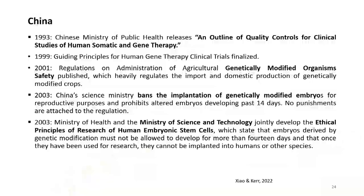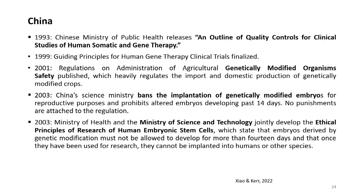Let us now examine developments in China. In 1993, the Chinese Ministry of Public Health released an outline of quality controls for clinical studies of human somatic gene therapy. In 1999, guiding principles for human gene therapy clinical trials were finalized. In 2001, regulations on administration of agricultural genetically modified organisms safety were published, heavily regulating the import and domestic production of genetically modified crops. In 2003, China's Science Ministry banned the implantation of genetically modified embryos for reproductive purposes and prohibited altered embryos from developing past 14 days, though no punishments were attached to the regulation.